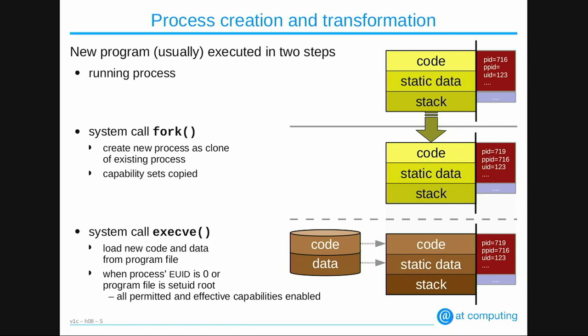Usually a child process goes on to load another program executable file into the process via the exec system call, and there are many changes made to the capability sets. The same process is still running with the same PID, open files, and signal handling, but via exec we load new code and data from an executable file. Things will change in the capability sets of the process, and at the end of the program load during exec, if the process runs under UID 0, all capability bits are set again in the permitted and effective sets.